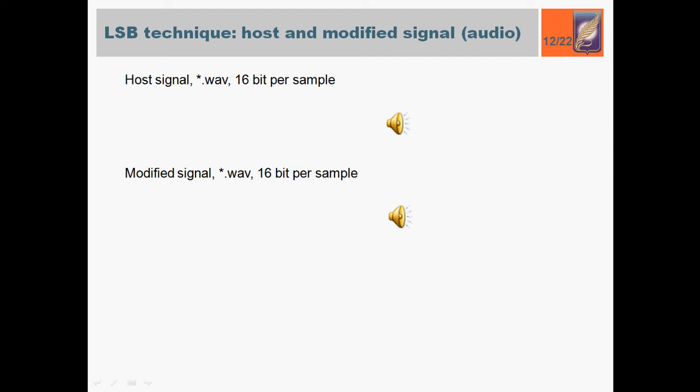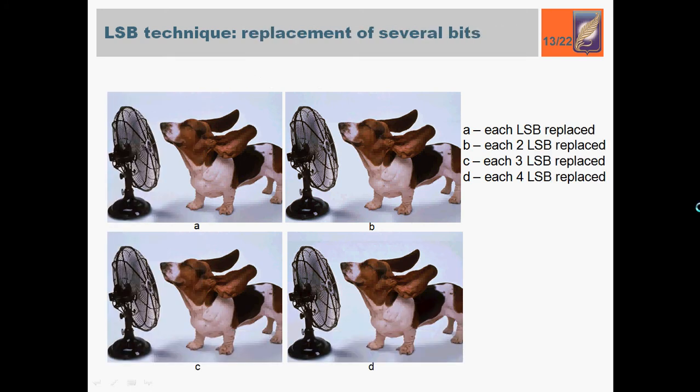Using the LSB technique, the maximum amount of embedding data equals to 12.5% of the container. Due to the fact that most of the images and audio files in a digital representation have considerable redundancy, there is a possibility to use steganography capacity, but using not only LSB, but also high-order bits, up to the third significant bit. From the picture, it's possible to see that even when three significant bits are replaced, shown in picture C, the modified container visual perception is the same. In this case, the capacity of the container increases to the 37.5%.